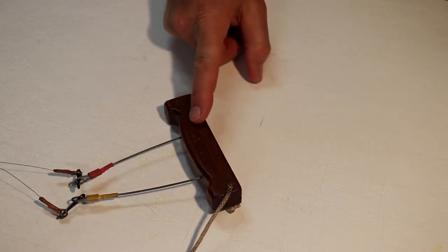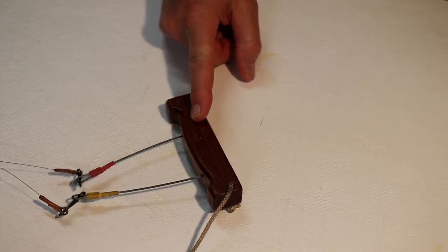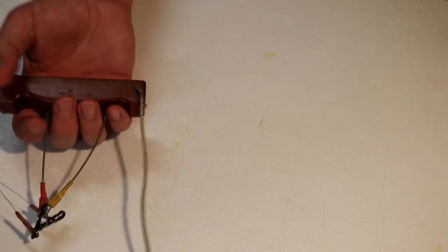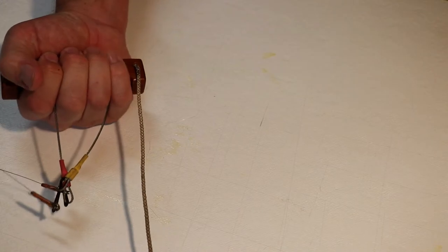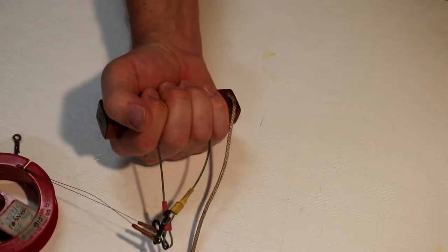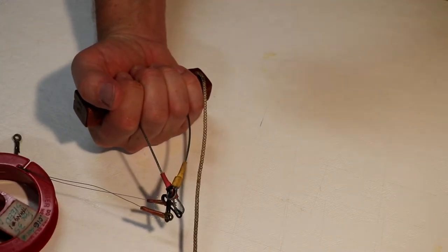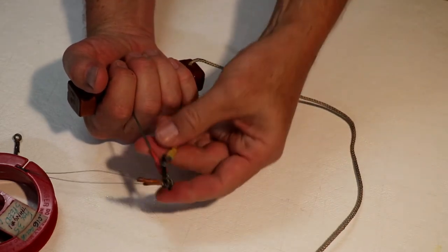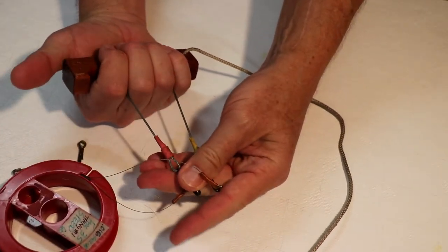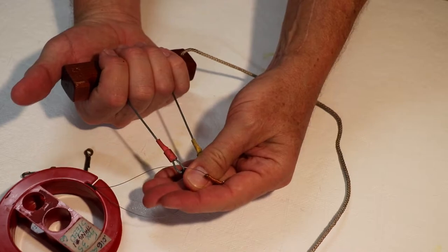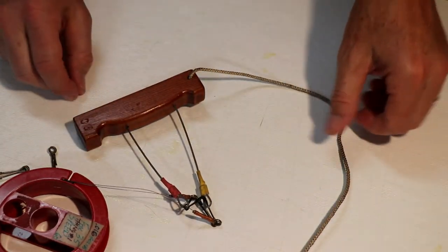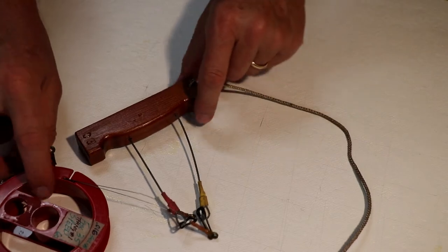This handle is unique in that it's for control line speed or racing because the line spacing is very narrow. So this is designed so that it goes in between your two fingers like that. When you're flying, it goes in between your two fingers.